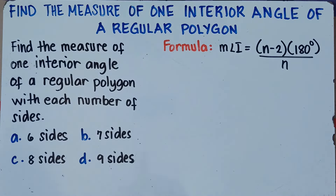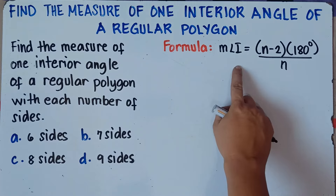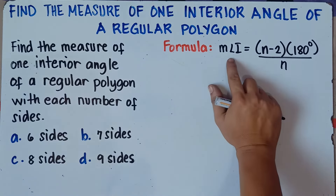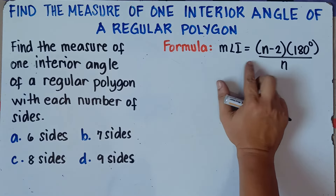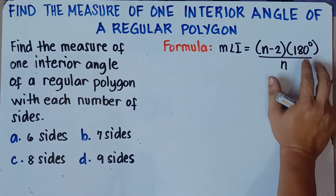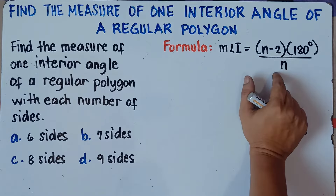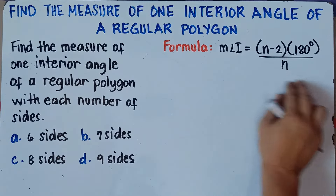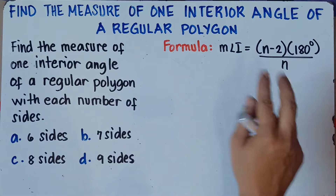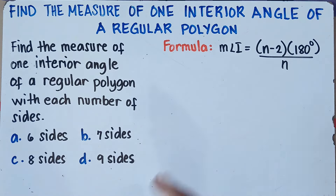To find the measure of one interior angle of a regular polygon, we can simply use this formula: the measure of one interior angle equals (n minus 2) times 180 degrees, over n. Here, n represents the number of sides. We can only use this formula if the polygon is a regular polygon — meaning it has equal sides and all interior angles must be congruent.